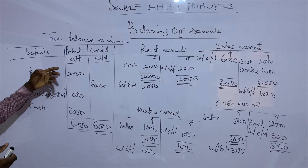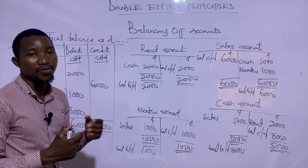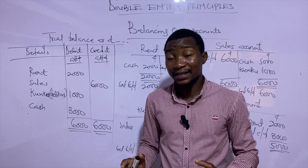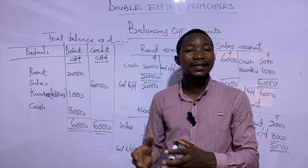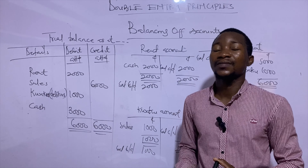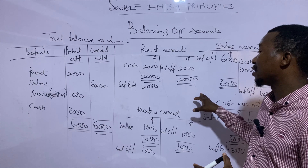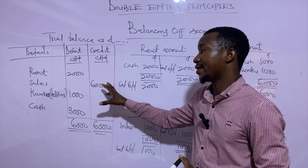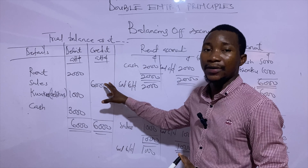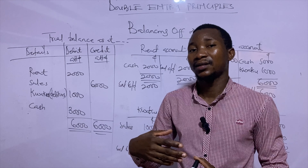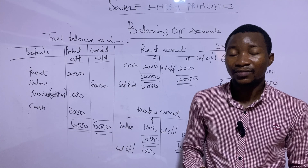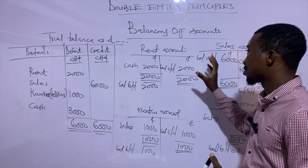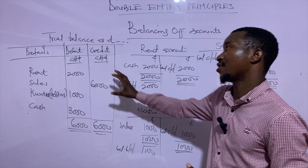The trial balance provides us with information to prepare the financial statements — that is the income statement and the statement of financial position. If the double entry made is wrong and the trial balance is also wrong, the profit shown in the income statement will be wrong. This matters because investors rely on the profit of a business to make decisions. This is how the concepts of balancing an account and the trial balance work.